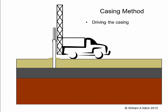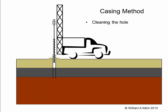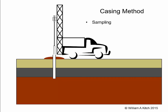Another method that can be used to advance the boring in caving or squeezing conditions is the casing method. In this method, a large diameter pipe is driven into the ground below the depth of the boring. The hole is then cleaned out using either the auger method or the rotary wash method. The casing supports the side of the hole and samples can be taken in the undisturbed soil below the casing.